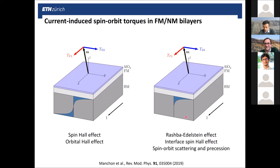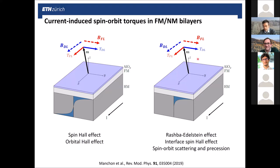There are different effects — for example, the Rashba-Edelstein effect or the orbital Rashba-Edelstein effect, as well as spin filtering by spin-orbit scattering and precessional effects — that give similar kinds of torques. You can also consider the corresponding effective fields, which are often measured instead of the torques.